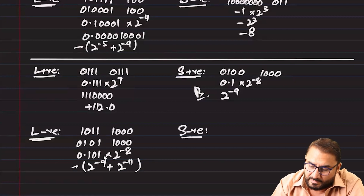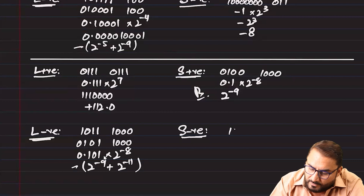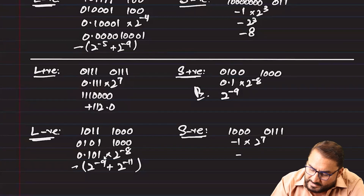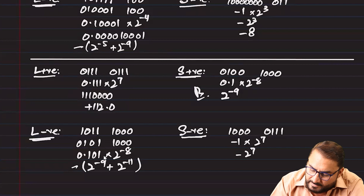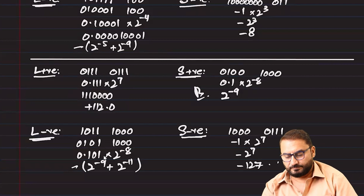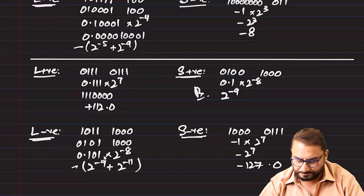For the smallest negative number with 4-bit mantissa and 4-bit exponent: the mantissa is 1000 and exponent is 0111. This becomes −1 × 2^7, which equals −2^7, or −128. That is the smallest negative number possible with 4-bit mantissa and 4-bit exponent.